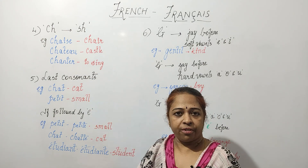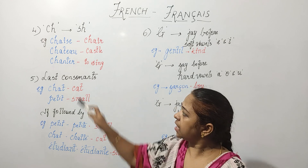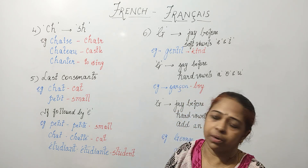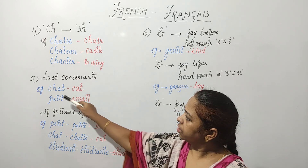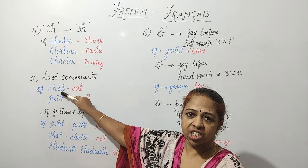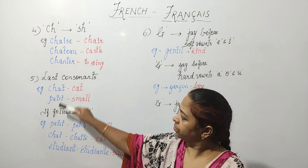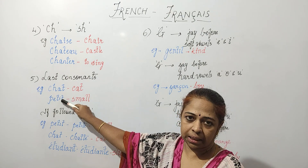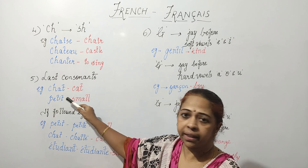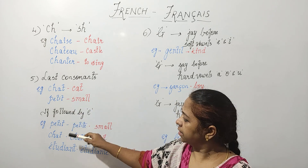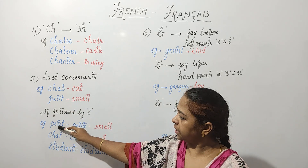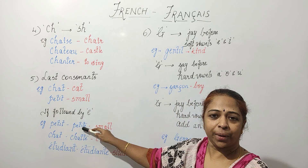In French, the last consonants are usually not pronounced. For example, 'chapeau' is pronounced as 'chapo.' But if they are followed by an E, then they are pronounced — for example, 'petit' is pronounced as 'petite,' which means small.